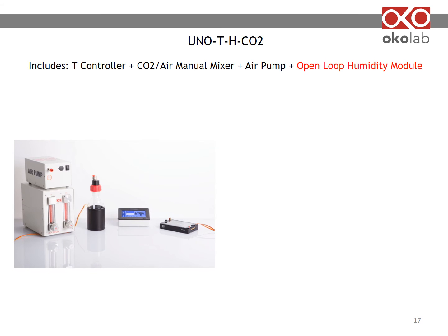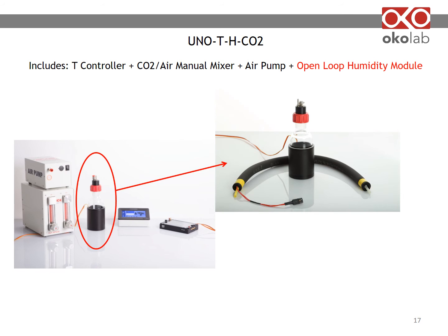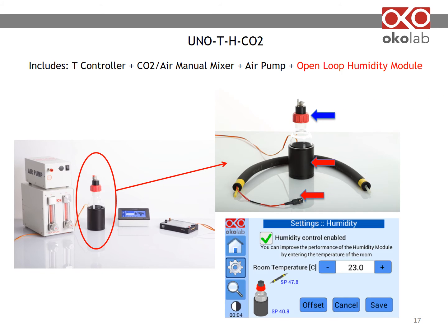UNO THCO2 includes a humidity module with a heated base, a glass bottle with lid, and heated and insulated tubing. To operate the humidity module, simply enable it by checking the box and input room temperature. The system will automatically set the temperature of the heating base and heated tube, optimizing humidity performance.